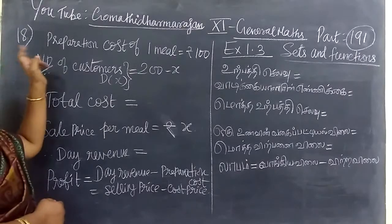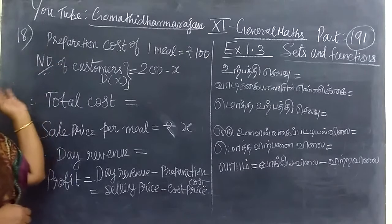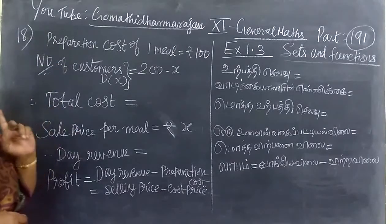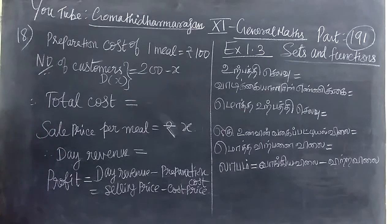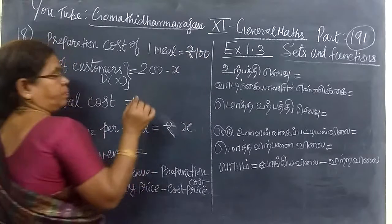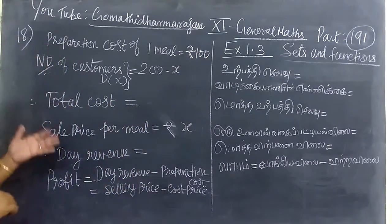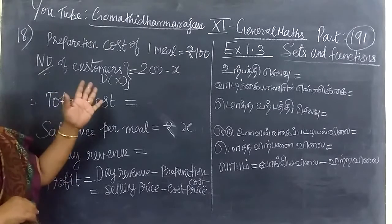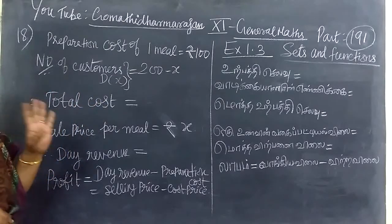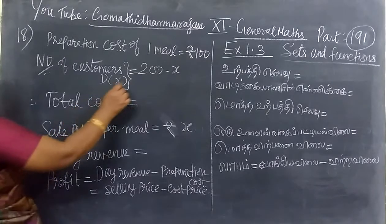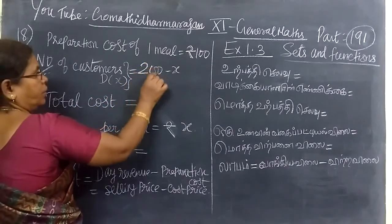You are given the preparation cost of one meal. The prepared contribution means they are buying vegetables and the amount aligned to the effort. Number of customers is 200 minus x.